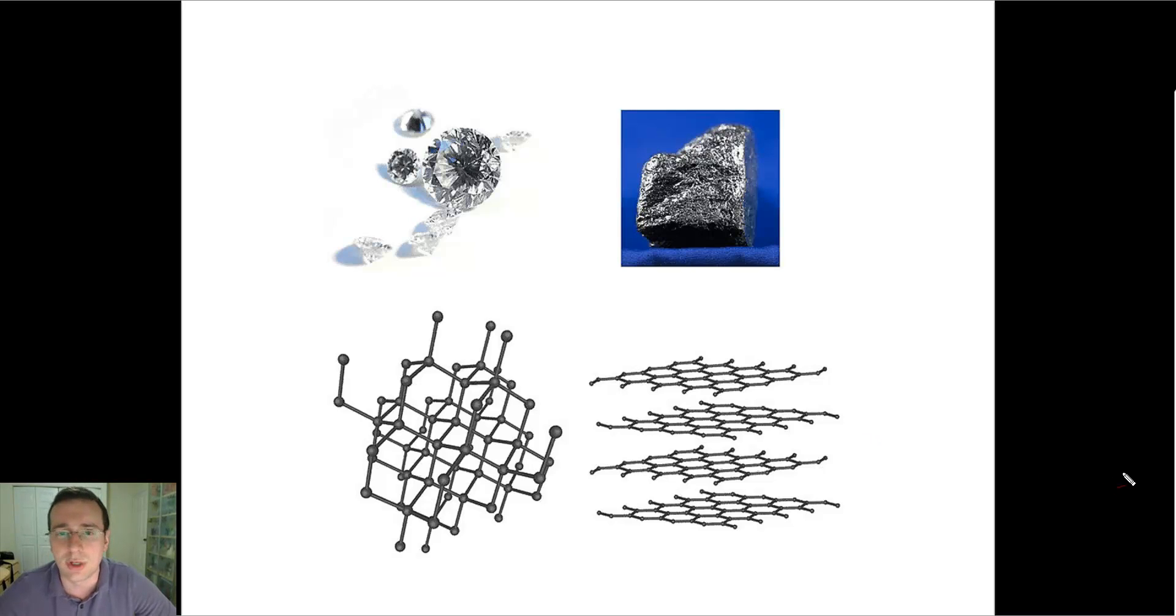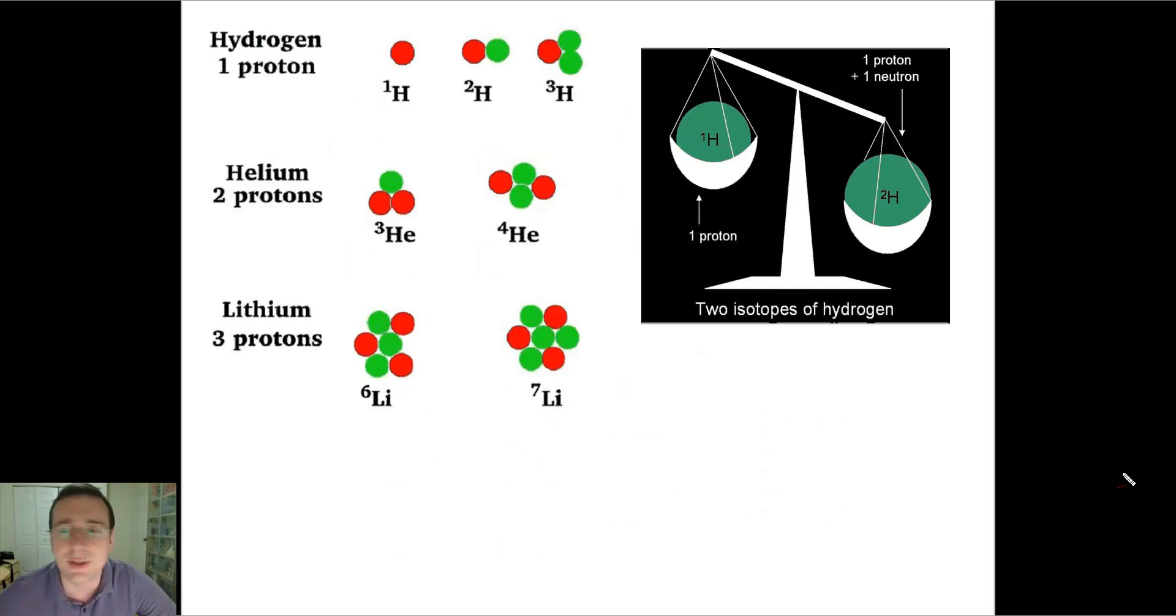Another way to look at differences within the same element is not so much in the way it physically looks, but in the actual composition of the nucleus of the atom. We call those isotopes. Here you see an example of several different kinds of isotopes. Look, for example, the most common element in the universe is hydrogen. You see that hydrogen normally only has one proton in its nucleus and it's surrounded by one electron.